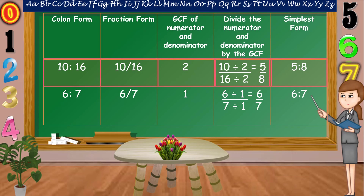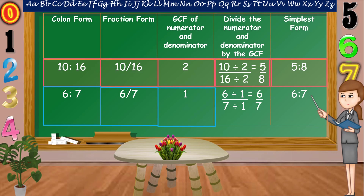Our last example: 6 is to 7, or 6/7. The GCF of the numerator and denominator is equal to 1. Let's divide both numerator and denominator by 1. Therefore, our simplest form is the same as our given ratio.